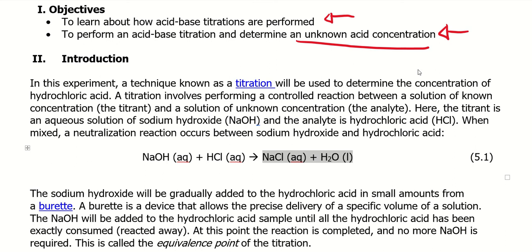A titration can be between anything of a solution of a known concentration and a solution of an unknown concentration usually. So it's just a controlled reaction. You'll always know one of the concentrations and you will not know the other one. So you'll always have a known and an unknown. Your known is called the titrant, your unknown is called the analyte. So in this case, it just happens to be an acid-base titration. There's other types as well.